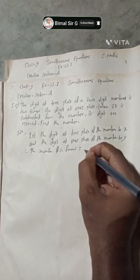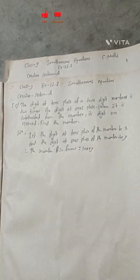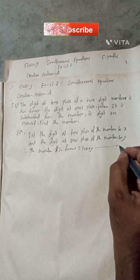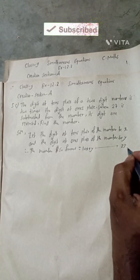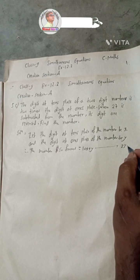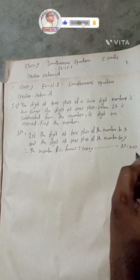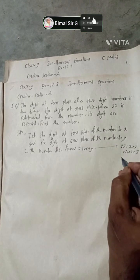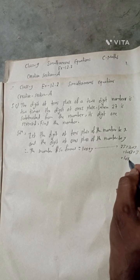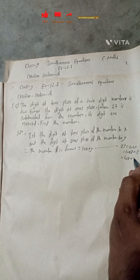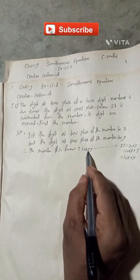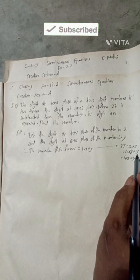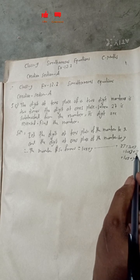Therefore, the number so formed is equal to 10x plus y. If you need explanation — suppose the number is 23. This 23 can be written as 20 plus 3, which means 10 into 2 plus 3. So if we suppose the tens digit is x and the ones digit is y, then the number formed will be 10x plus y. The digit at tens place is x and the digit at ones place is y.